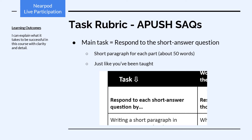Let's look now at your first American Studies task rubric, this one over responding to APUSH essay cues. The main task reads: respond to the short answer question. This is where you write just a short paragraph for each part of the question, about 50 words on average for each part, just like you've been taught.